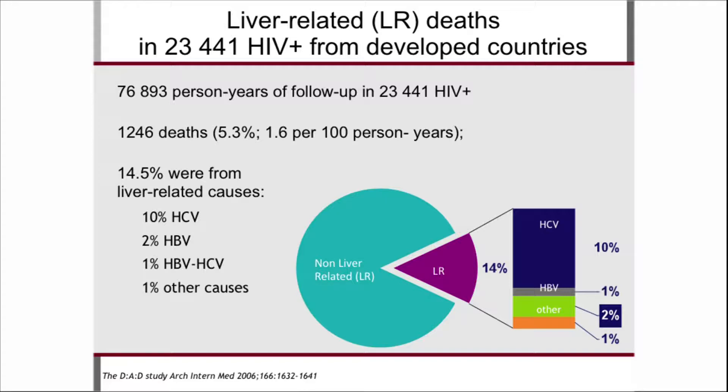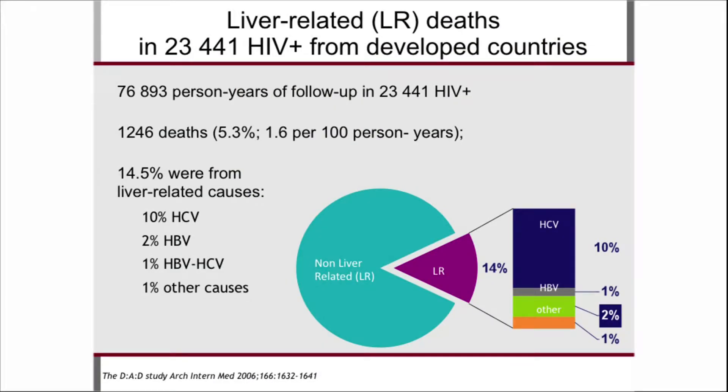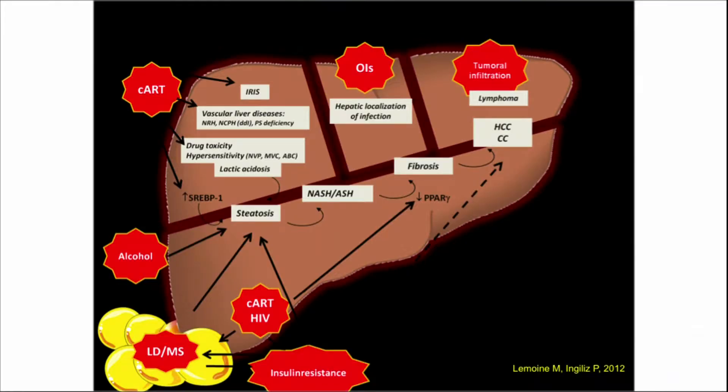I want to point out that HCV is the main cause of liver-related deaths — this is clear. Hepatitis B may be second, but there are still other causes we have to deal with, whether it's fatty liver disease or other conditions. Also, we don't know why some HIV-HCV co-infected patients progress so fast — sometimes from infection to liver transplantation in just 10 years. There are clearly underlying factors that make hepatitis C so severe in some patients and less so in others, and we need to find out what those are.